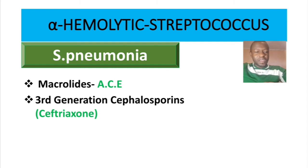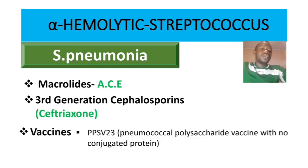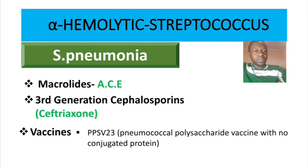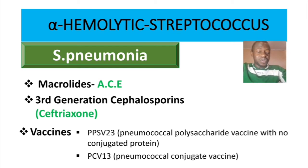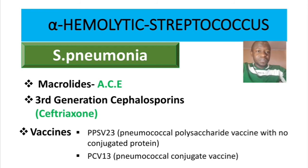There are two vaccines for Strep pneumo. The first is the pneumococcal polysaccharide vaccine with no conjugated protein, also known as PPSV23. This vaccine is used in adults and stimulates the production of IgM antibodies. The second vaccine is the pneumococcal conjugate vaccine, or PCV13. As the name suggests, it is conjugated with a protein. This vaccine is for children, and it stimulates production of both IgG and IgM antibodies.